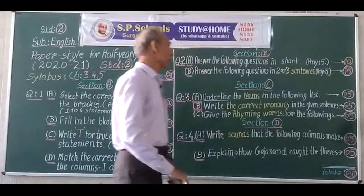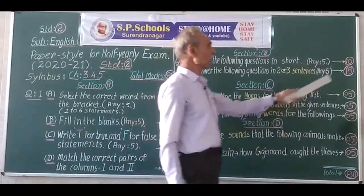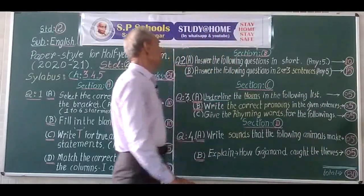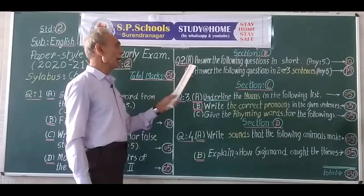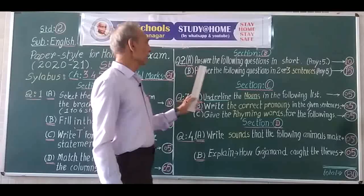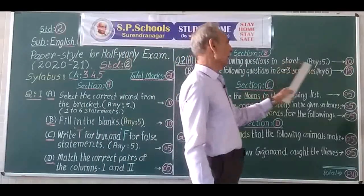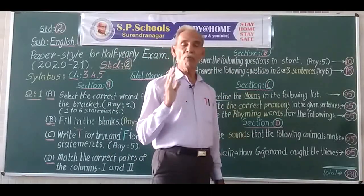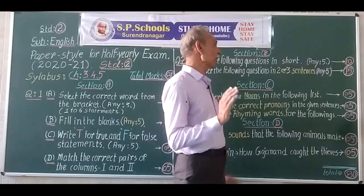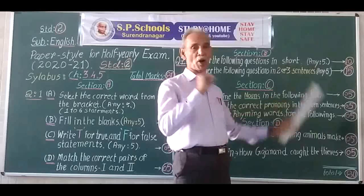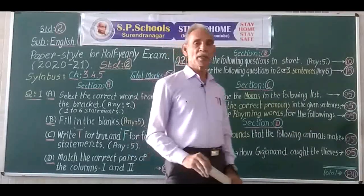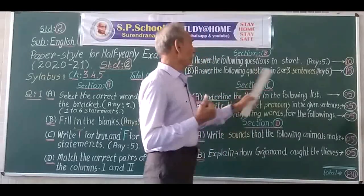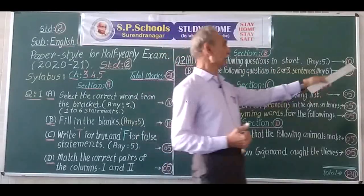Moving over to Section B. This section is important — it carries 25 marks in all. Section B has Question 2A: answer the following questions in short. You will be asked 6 questions and you have to write any 5 in short — in one word or one sentence it is sufficient to answer. This gets you 10 marks.